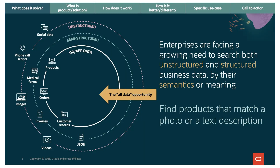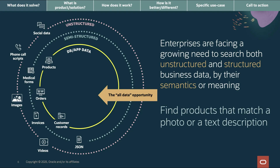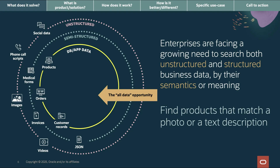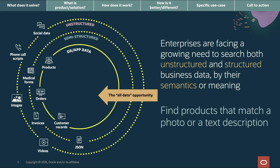Look what's happened — your structured data, that inner circle, is surrounded by massive amounts of unstructured data. That inner layer is database and app data. The semi-structured layer is JSON documents, invoices, medical forms, etc. The unstructured layer is images, videos, social data, call scripts. Enterprises need to search both structured and unstructured data by semantic meaning — not simply keywords, but actual understanding of what these things mean.